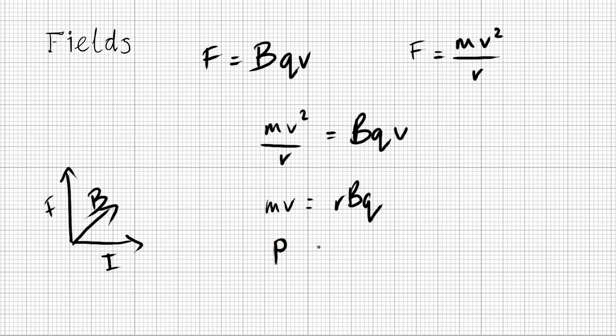MV is P, momentum. P over BQ equals R. So you actually get given this one but it's useful just to see where that comes from. This is going to be one of your most important relationships for particle physics.